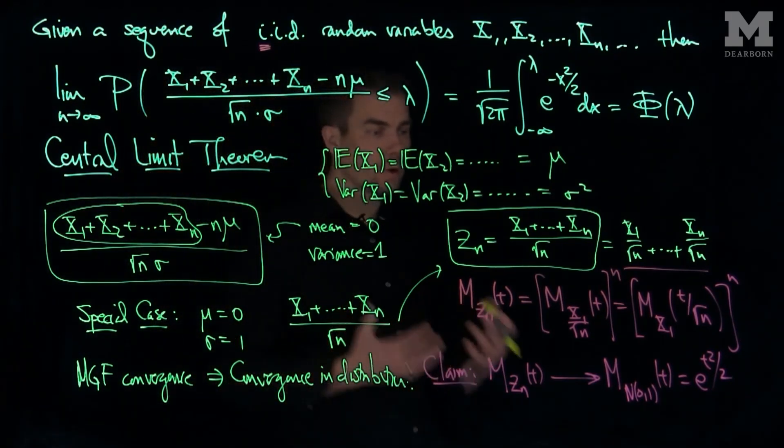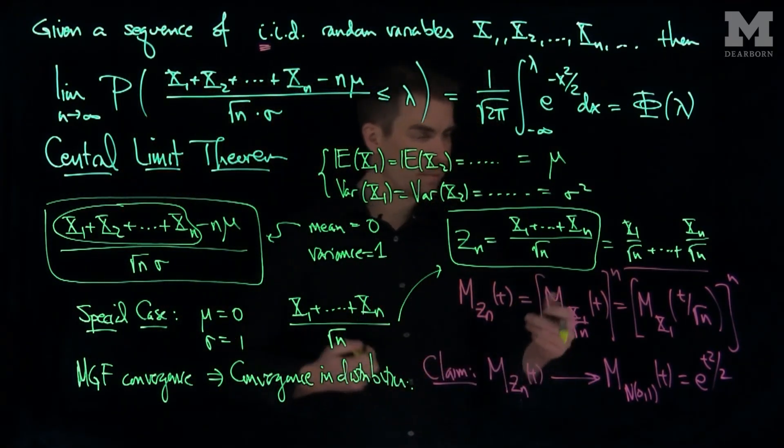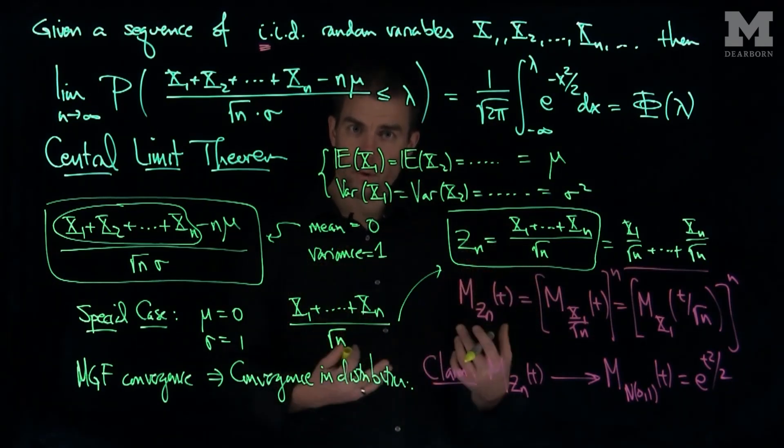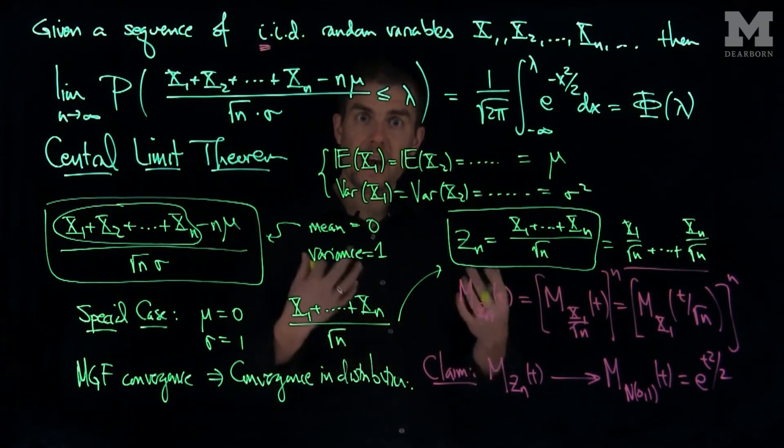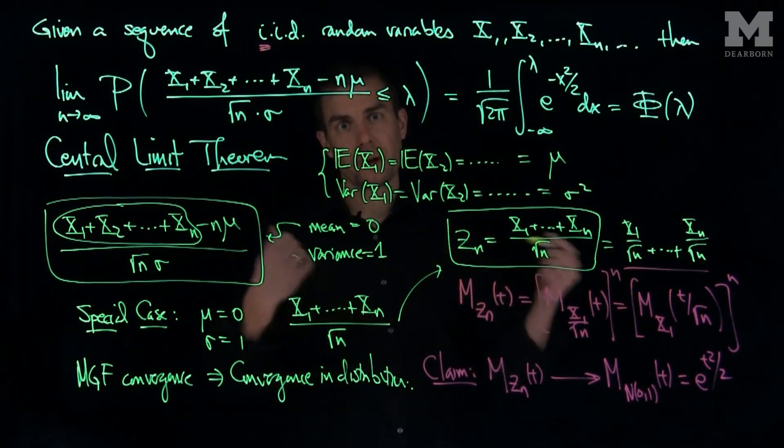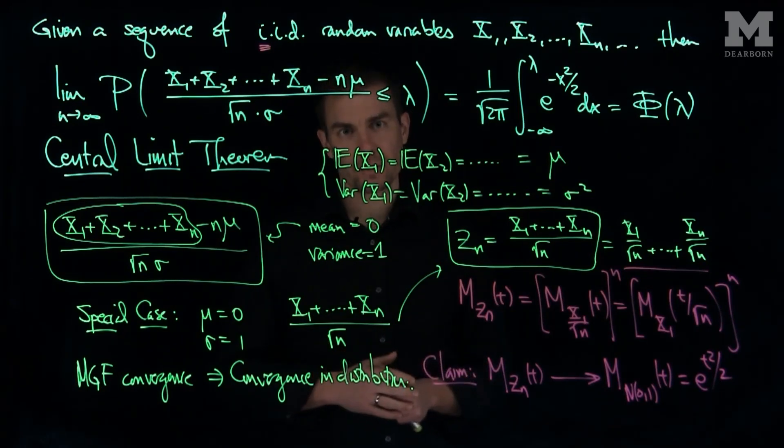So the central limit theorem shows the true power of the moment generating function method because when you're summing independent random variables you have a product structure for the moment generating functions, and that implies that a logarithm will change the scale of the problem in understanding how the variance comes into play. Thank you very much.